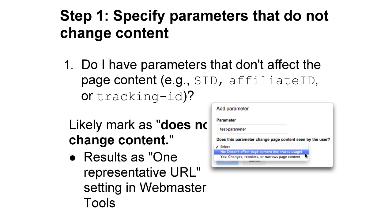Now let's get started with the feature. Step one is to specify parameters that don't change the page's content. You can ask yourself: do I have parameters that don't affect page content? Things like a session ID, an affiliate ID, or a tracking ID. These types of parameters don't change page content, and so in the feature you can mark them as 'does not change content.' Once you've set that, Webmaster Tools will put one representative URL as the setting, and then Googlebot will act accordingly.